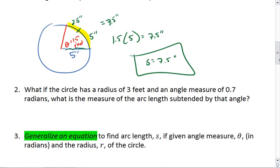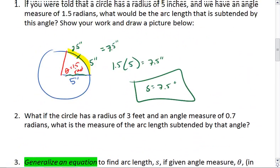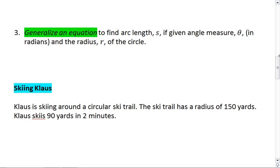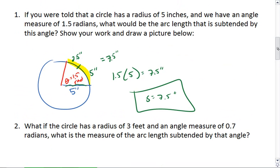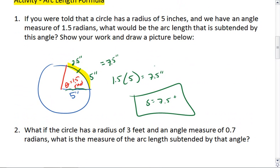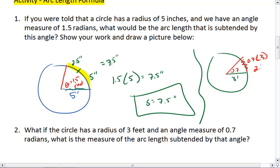Next part says, what if the circle has a radius of 3 feet and an angle measure of 0.7 radians? Well, let's look at that. If we have a radius of 3 feet and our angle measure is only 0.7 radians, that means this arc length is 70% of 3 feet, or 0.7 times 3, which gives us a 2.1 foot arc length.